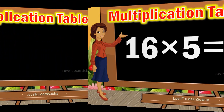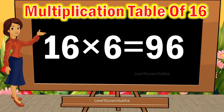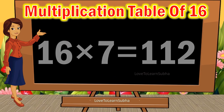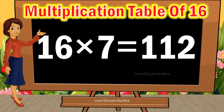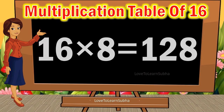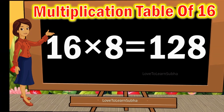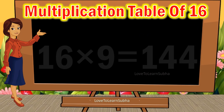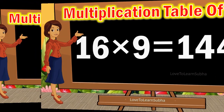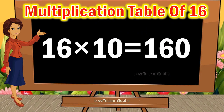16 sixes are 96. 16 sevens are 112. 16 eights are 128. 16 nines are 144. 16 tens are 160.